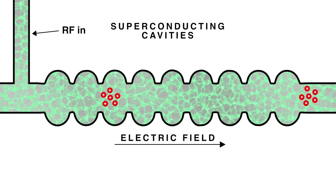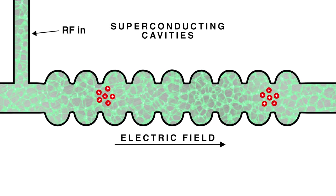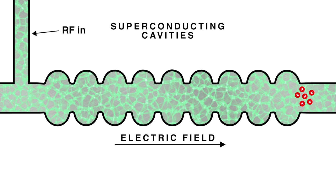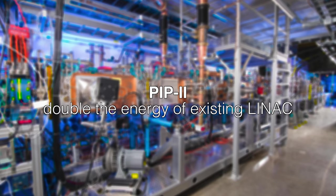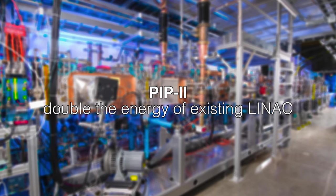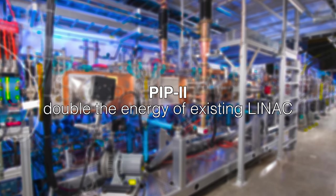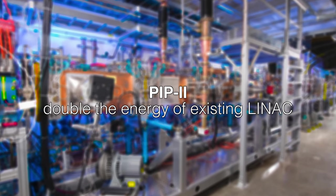Because of considerations arising from other accelerator components, we won't send beam through PIP2 constantly, although we'll keep the radio waves on all of the time. The PIP2 LINAC will double the energy of the existing facility: 800 million electron volts instead of 400.